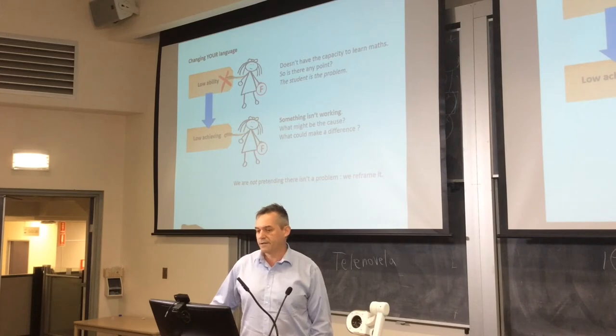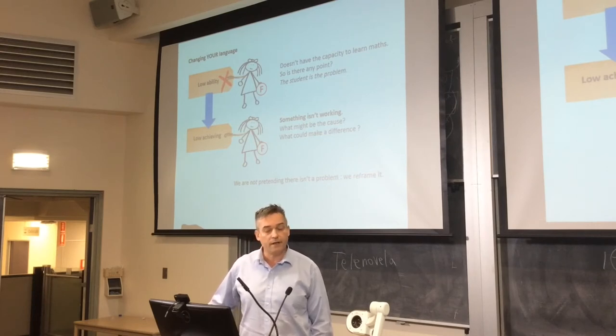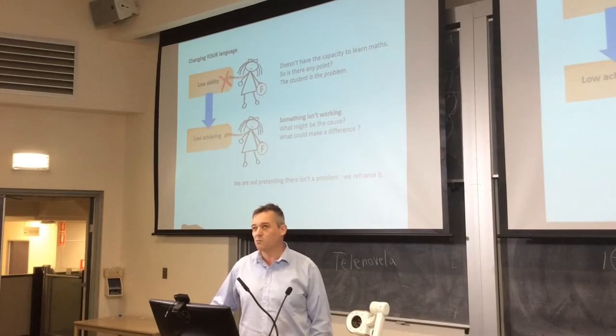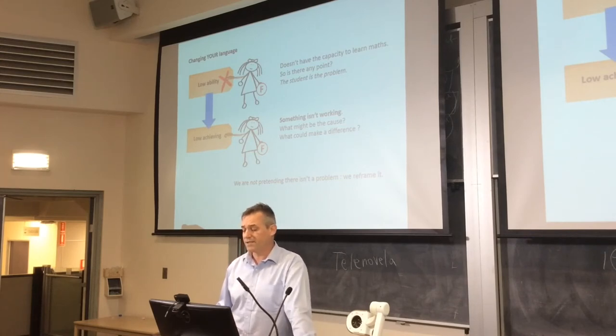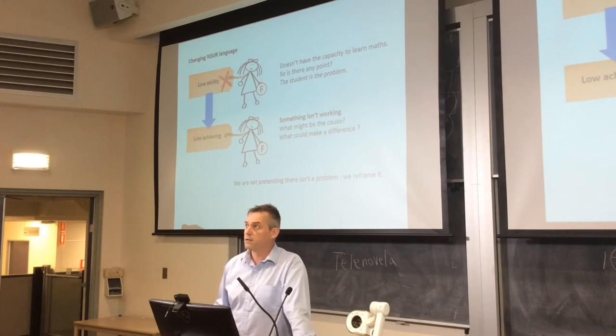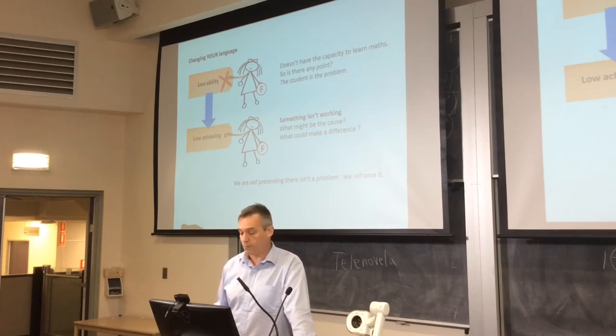Okay, so why does it make a difference? It makes a huge difference. If you describe a student as low-ability, you're basically saying the student is a problem. If you say they're low-achieving, you're actually saying something isn't working for the kid. There could be a cause, and there might be something we could do about it. I should be very clear: I'm not saying we're pretending there is no problem. We're not hiding a problem, but we're relabeling it. We're reframing the problem.